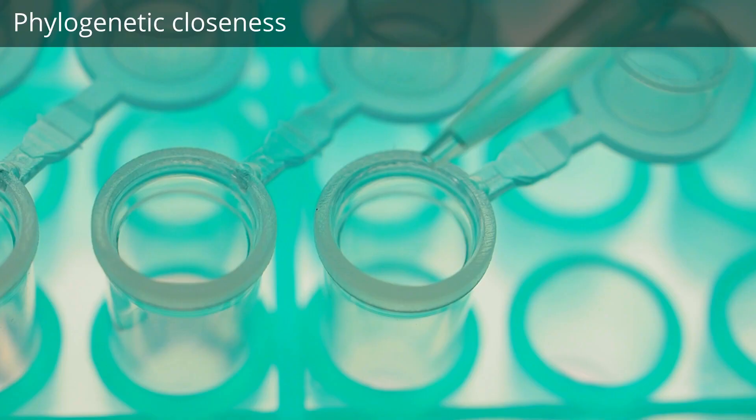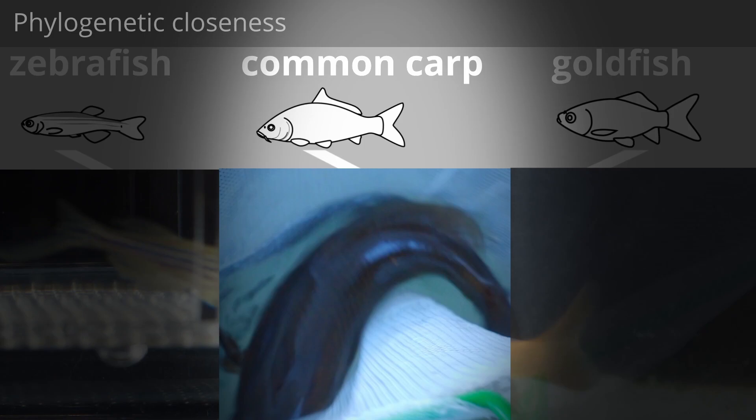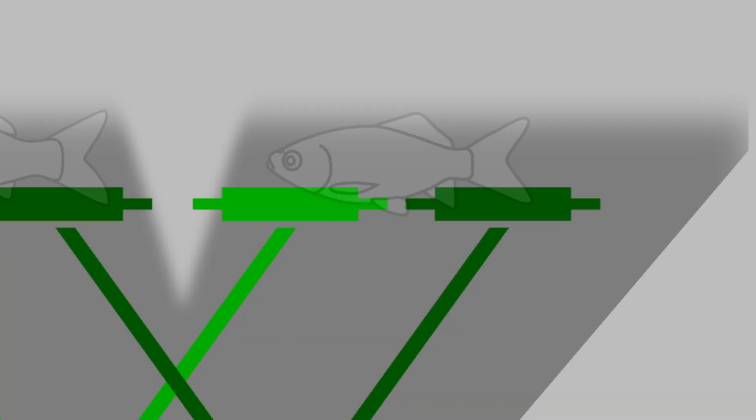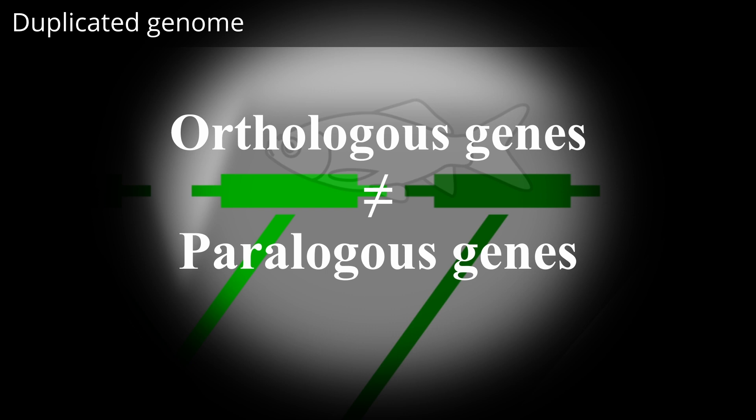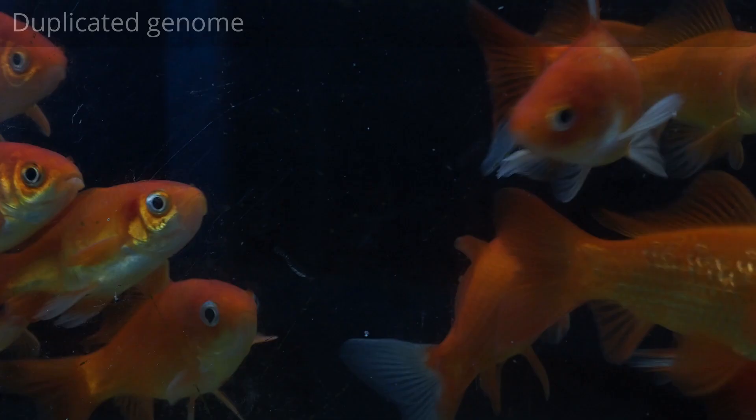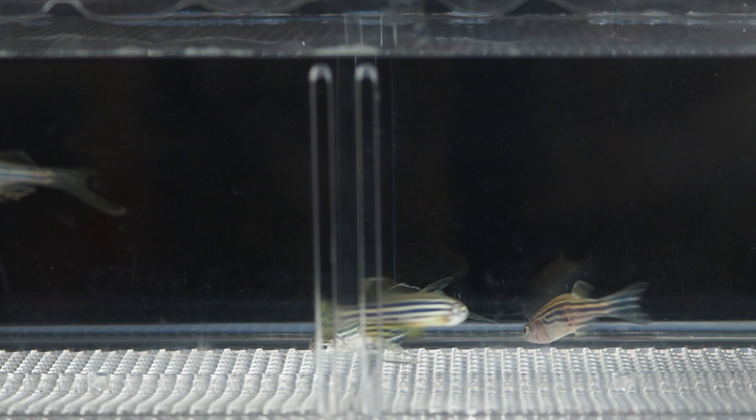Third, goldfish provides no obvious benefits to researchers who want to investigate molecular developmental systems, partly due to the phylogenetic closeness with zebrafish. Moreover, goldfish have a duplicated genome. This causes a complicated problem in the identification of orthologous genes. If your research goal is to obtain accurate and efficient results as quickly as possible, which model organism would you prefer — goldfish or zebrafish? I suppose most of you would prefer to use zebrafish due to its convenience and well-established genetic tools.